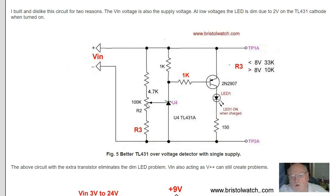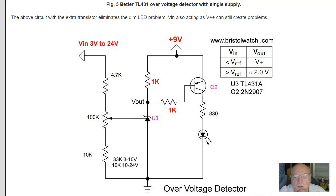You adjust R2 here for the voltage that you want to turn the LED on. When it meets that voltage, LED comes on of course. If it's less than that voltage, the LED goes off.